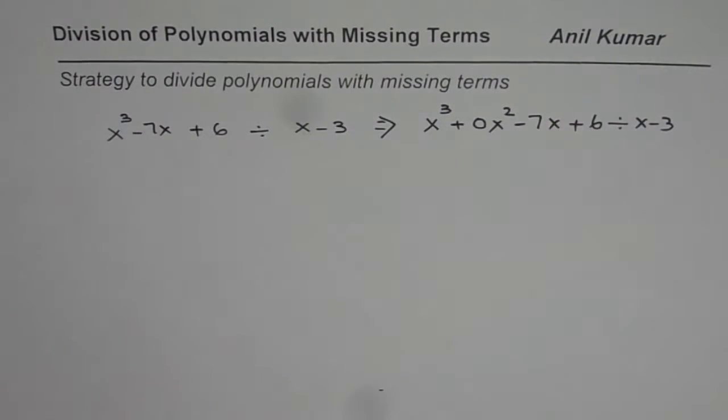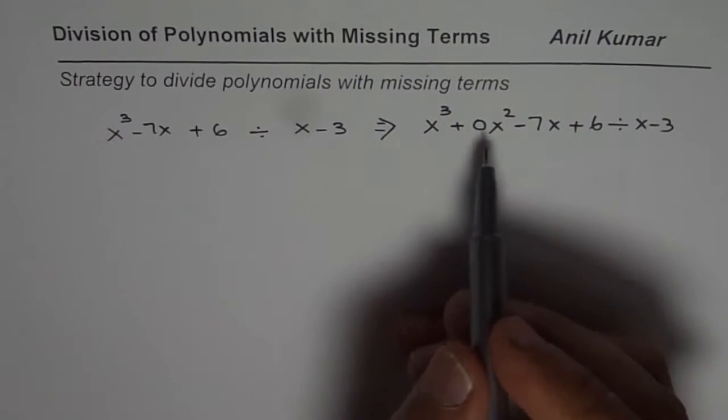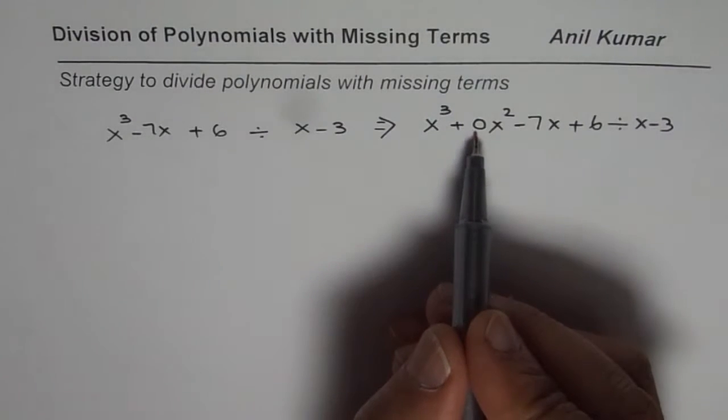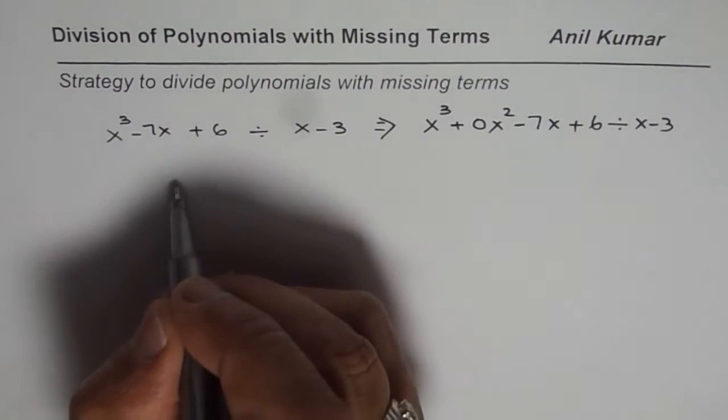You get the point. The idea here is that if there are missing terms in between, we should actually incorporate them with 0 coefficient. That is the whole idea.